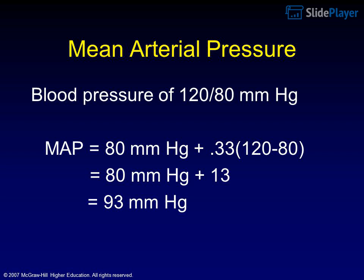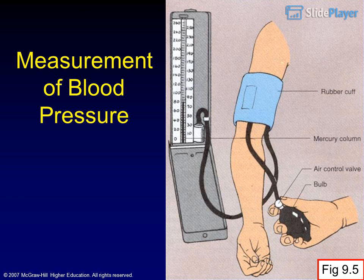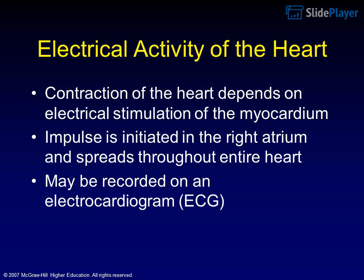Measurement of blood pressure is shown in Figure 9.5. Factors that influence arterial blood pressure are shown in Figure 9.6. Electrical activity of the heart: contraction of the heart depends on electrical stimulation of the myocardium. The impulse is initiated in the right atrium and spreads throughout the entire heart. It may be recorded on an electrocardiogram (ECG).